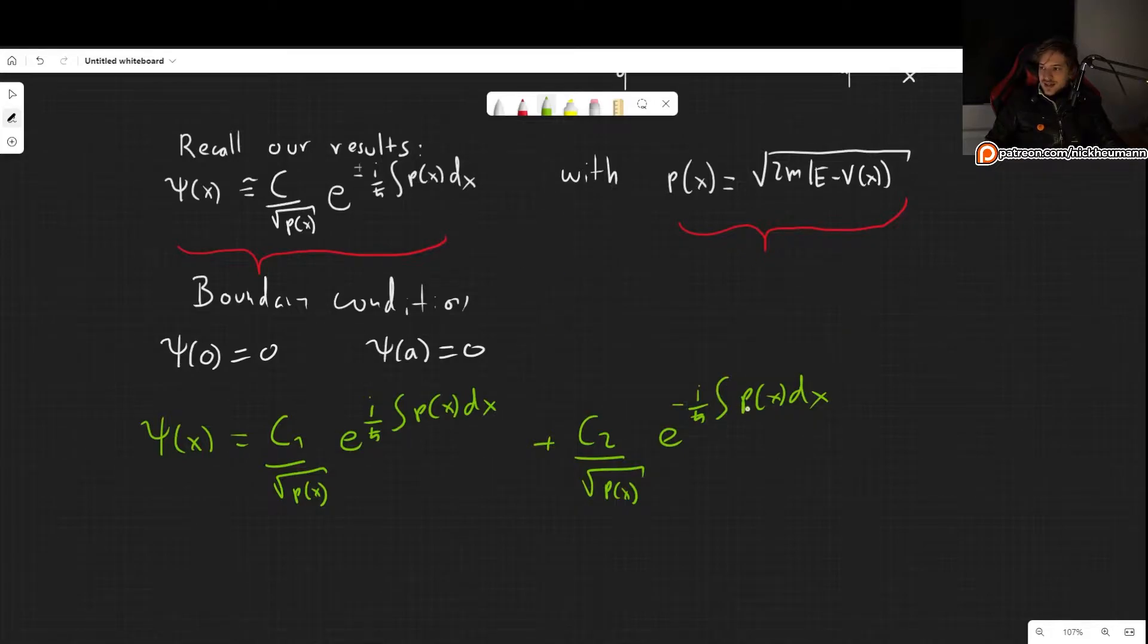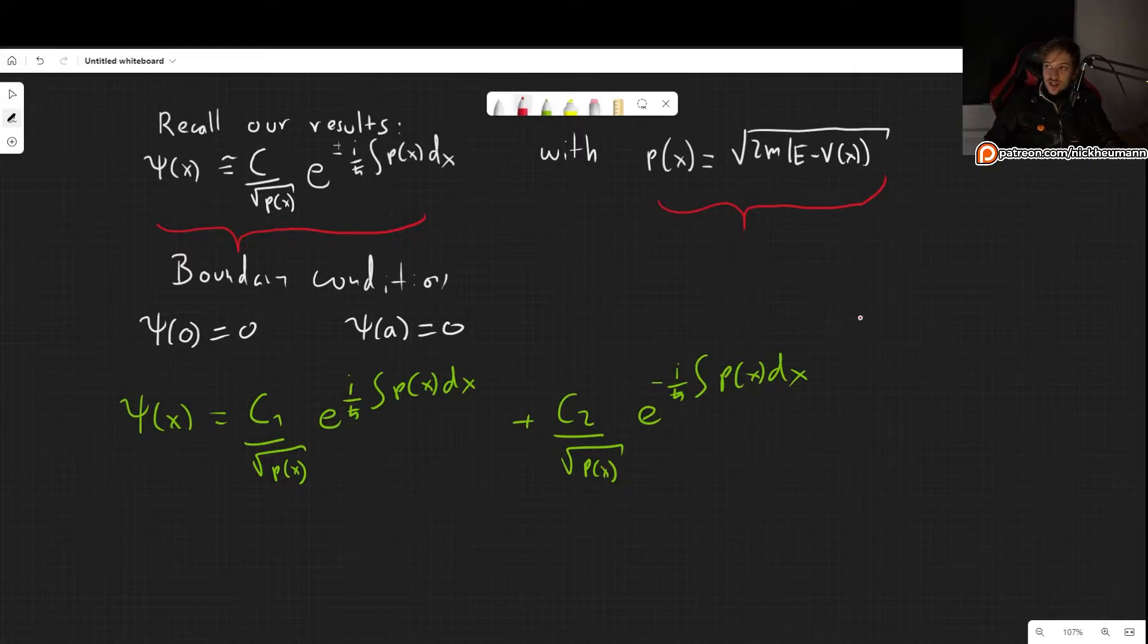So this one here is negative integral of p of x dx. Now writing this integral the entire time is going to be a little bit annoying. So we can go back to the notation that we had in the previous video which is that phi of x, this is the integral. For now we will not use any boundaries but we will add them later.